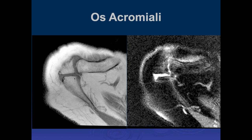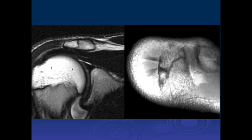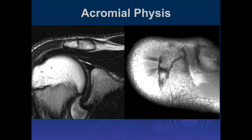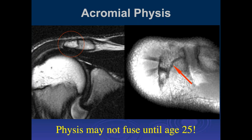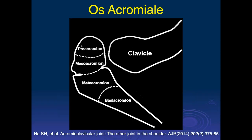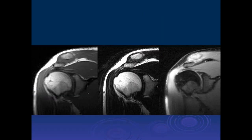Another cause of outlet impingement is an os acromiale—you're all familiar with these. They can become unstable and lead to impingement in the rotator cuff outlet. Remember that the normal physis here doesn't close until the early twenties, so don't overcall os acromiale in younger patients. There are different sizes depending on the location of incomplete fusion.